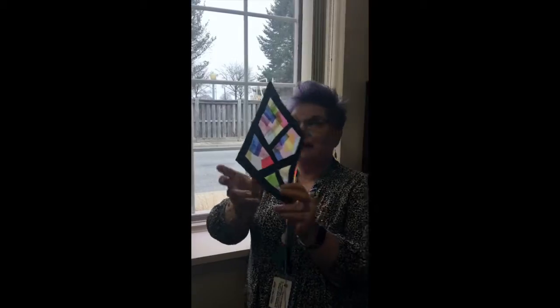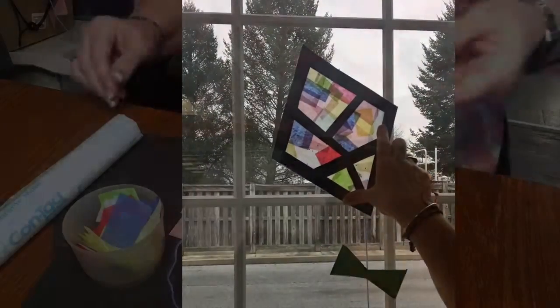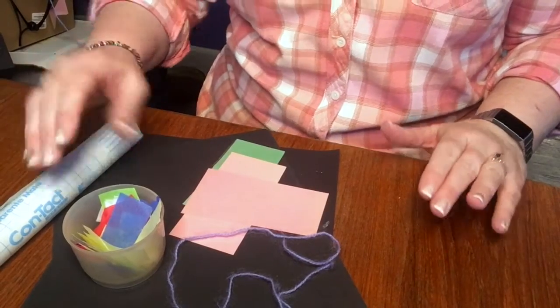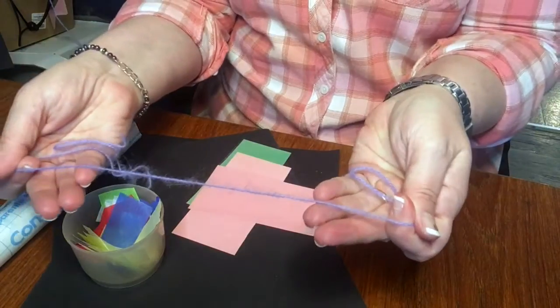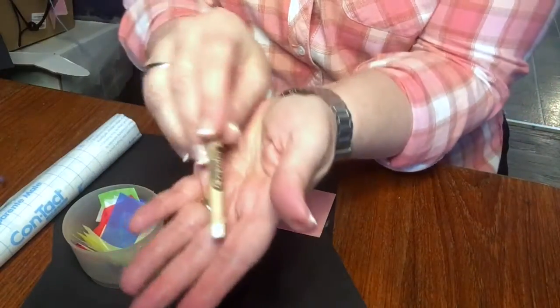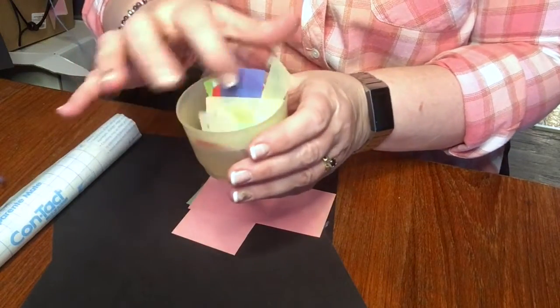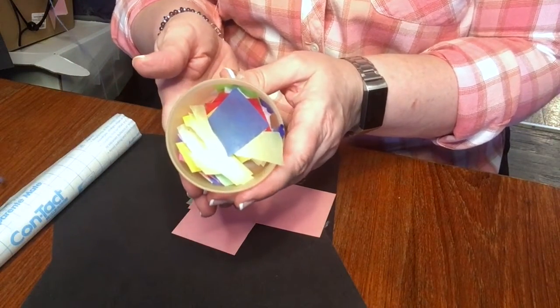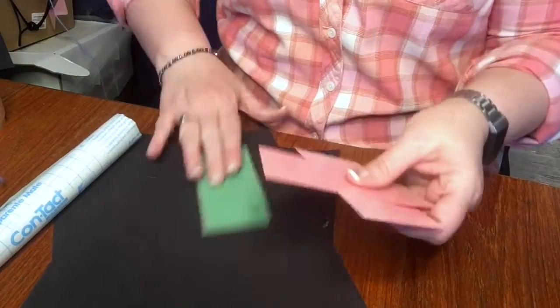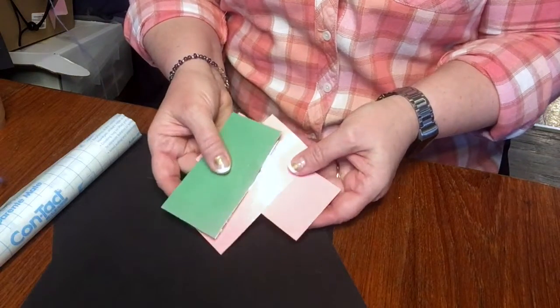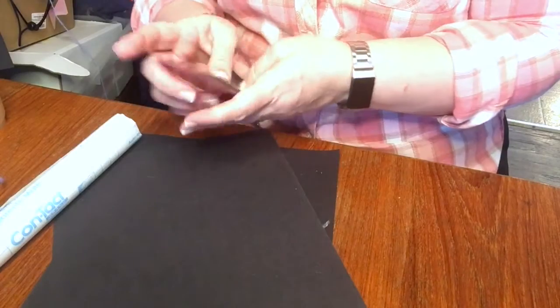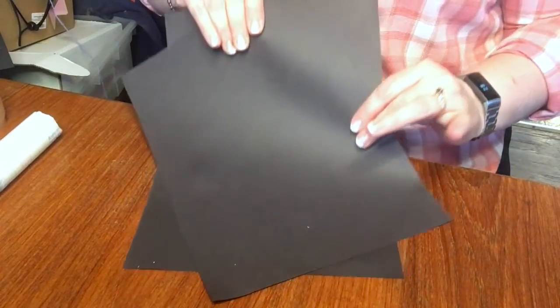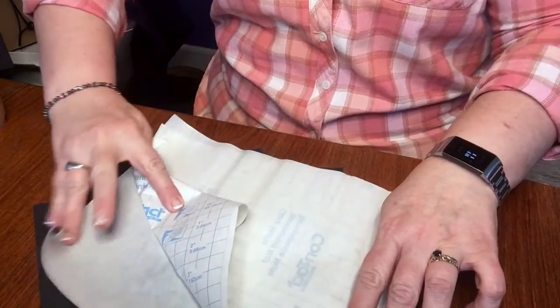Hi Hershey Library friends, it's Miss Rita, and today I'm here to show you how to make this awesome kite that is also a mosaic and a sun catcher. In your kit today you have a piece of yarn, a white crayon, about 30 pieces of tissue paper, a few pieces of laminated scraps, two pieces of black construction paper, and two pieces of clear contact paper.